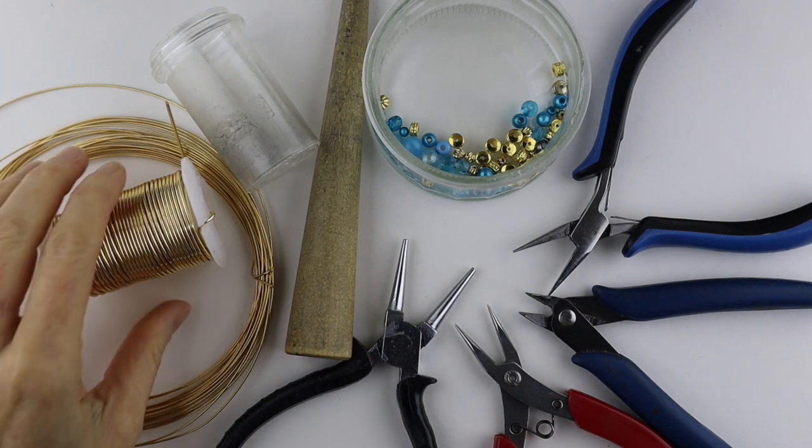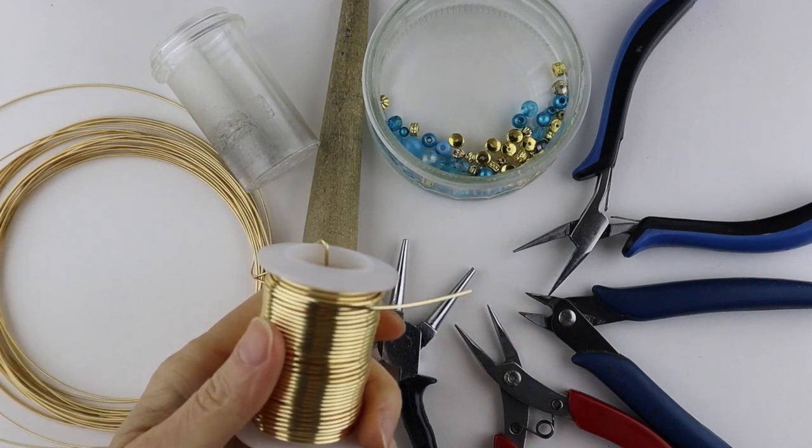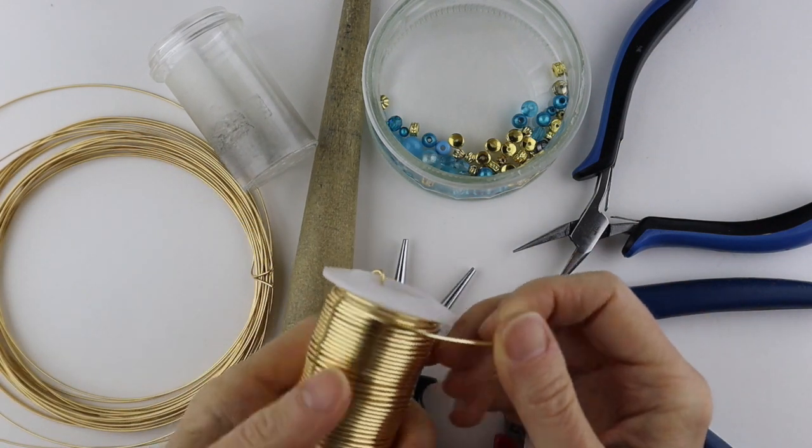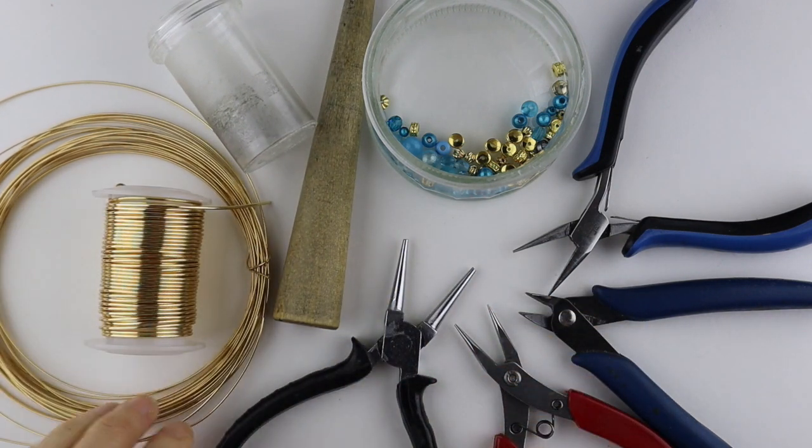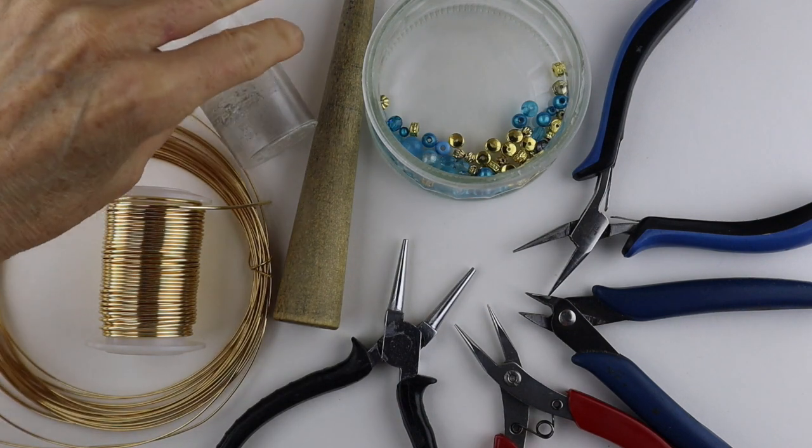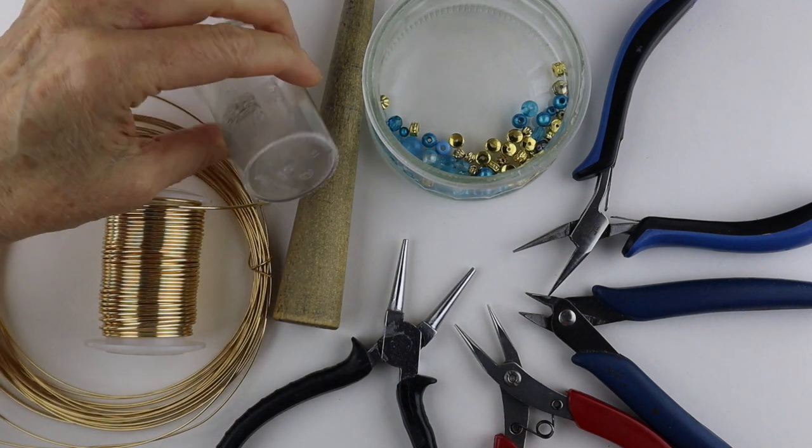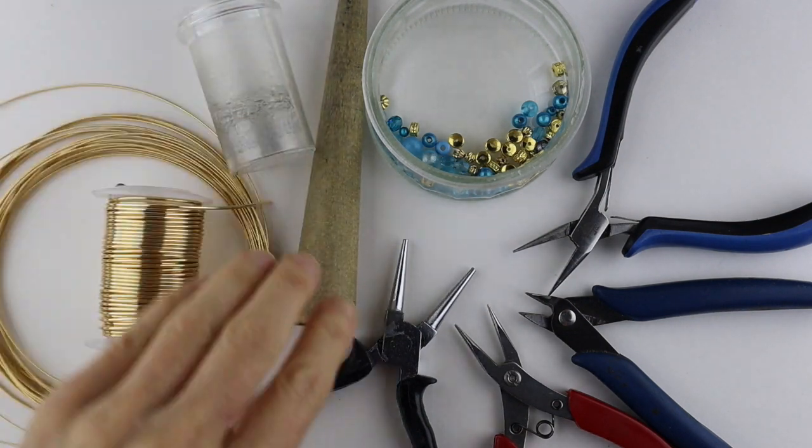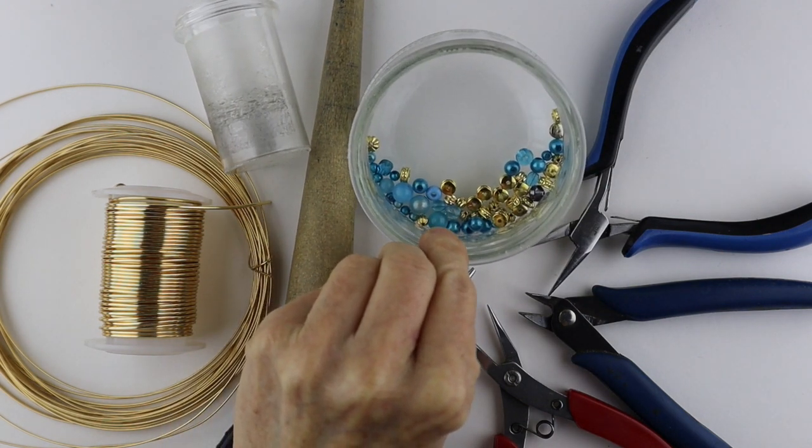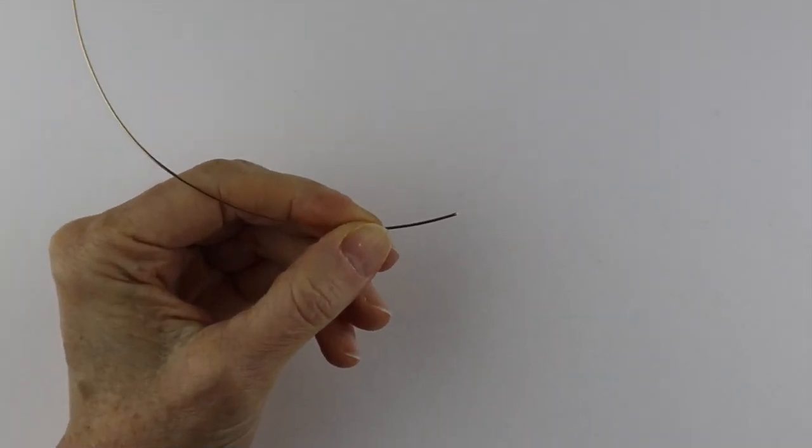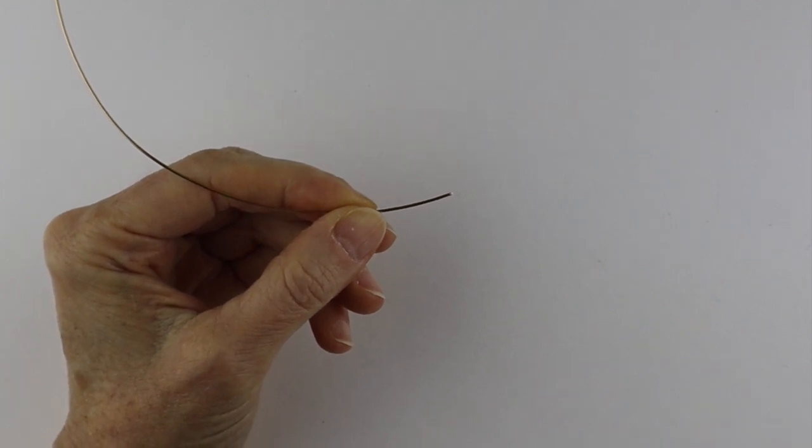I'm using 16 gauge wire from Michaels - it's nice and stiff for the base. I have 20 gauge wire as well. I'm using a round pill bottle for the form of the circle, a cone, and I have a variety of beads from 4 millimeter to 6 millimeter.